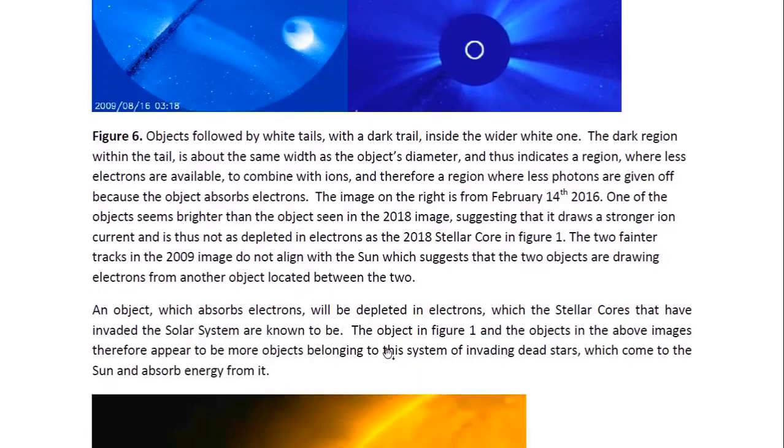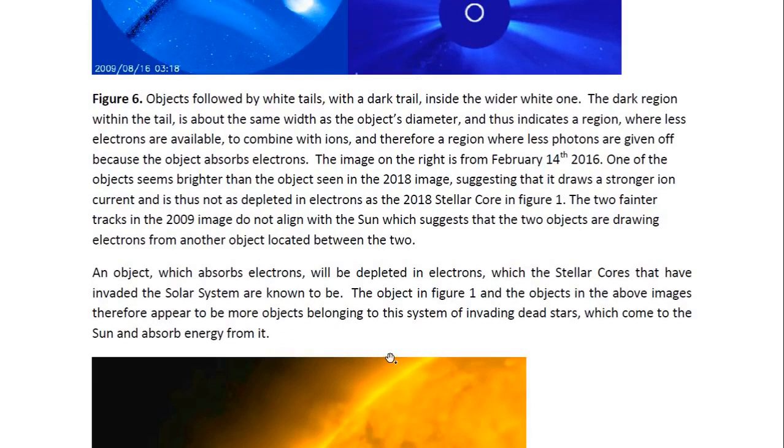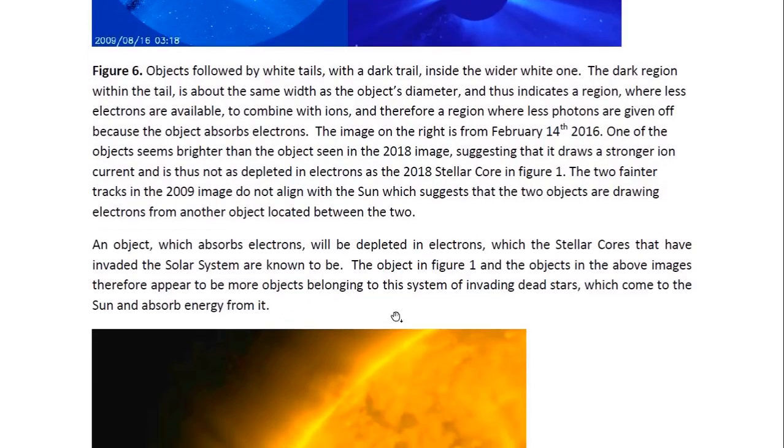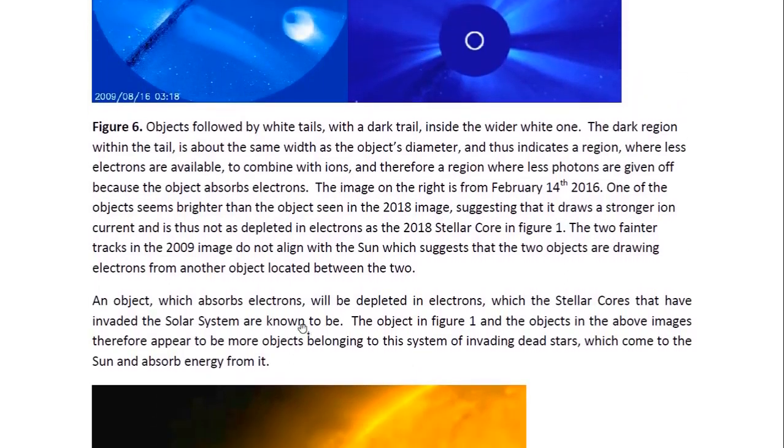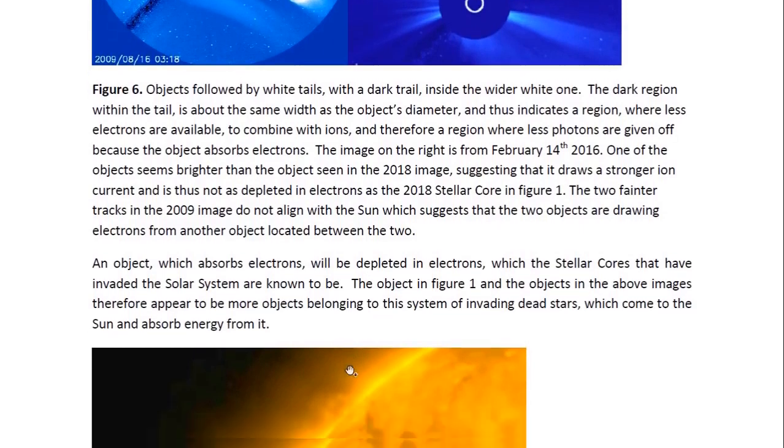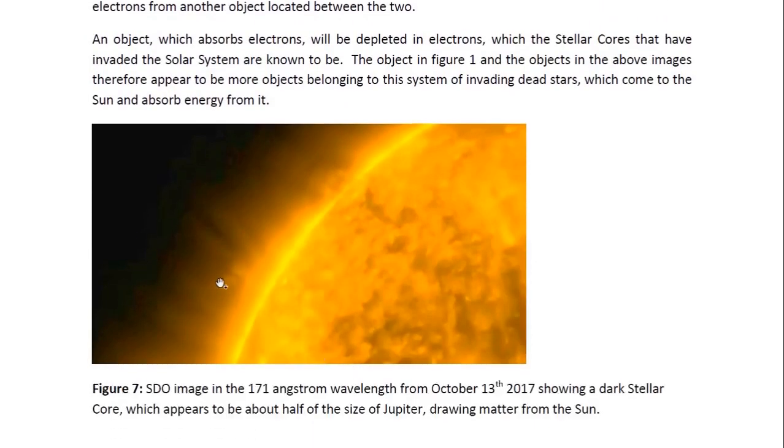An object which absorbs electrons will be depleted in electrons, which the stellar cores that have invaded the solar system are known to be. So the object in figure one and the objects in the above images therefore appear to be more objects belonging to this system of invading dead stars which come from the sun and absorb energy from it. We see one of these objects in an SDO image drawing material from the sun. This is the main way they draw energy from the sun. This material will have a lot of protons in it, a lot of gravitational energy which is in the form of photons within that matter. The object draws gravitational energy that way. Most likely it will draw electrons first of all when it first makes contact with the sun's corona.